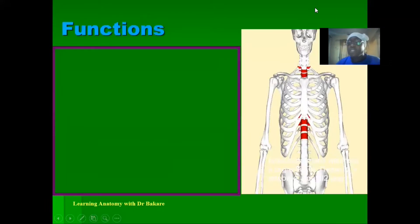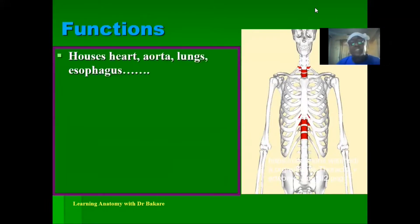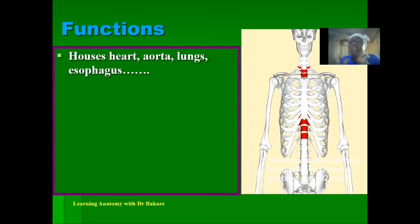Let's look at the functions of the thoracic cage. The thoracic cage helps to house the thoracic cavity, and within it we have vital organs. The function of the thoracic cage is to house these vital structures, which include the heart, the lungs, the oesophagus, and also the aorta.